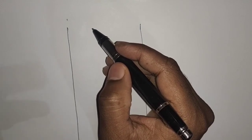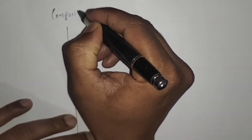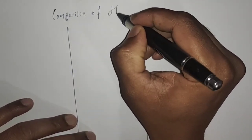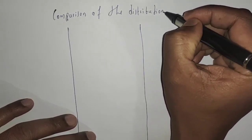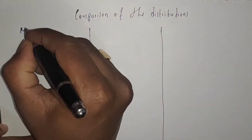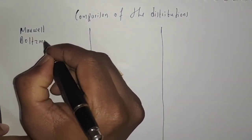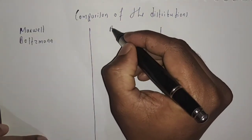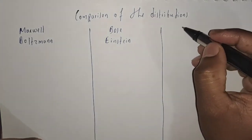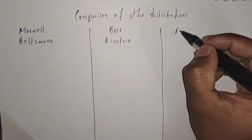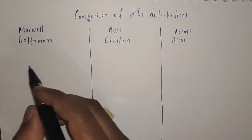In this video I am going to compare three types of distribution: Maxwell-Boltzmann Statistics, Bose-Einstein Statistics, and Fermi-Dirac Statistics.